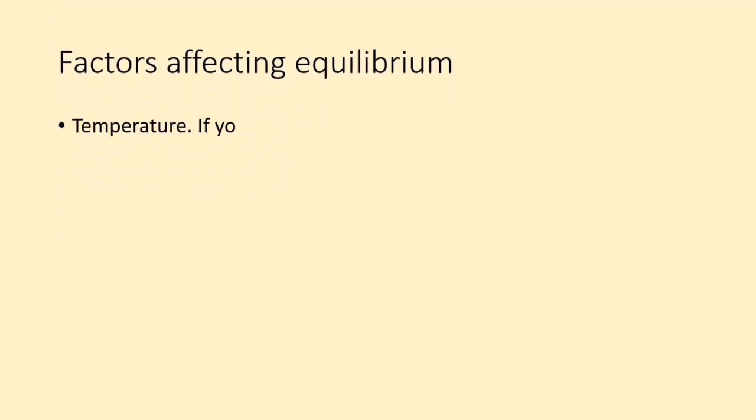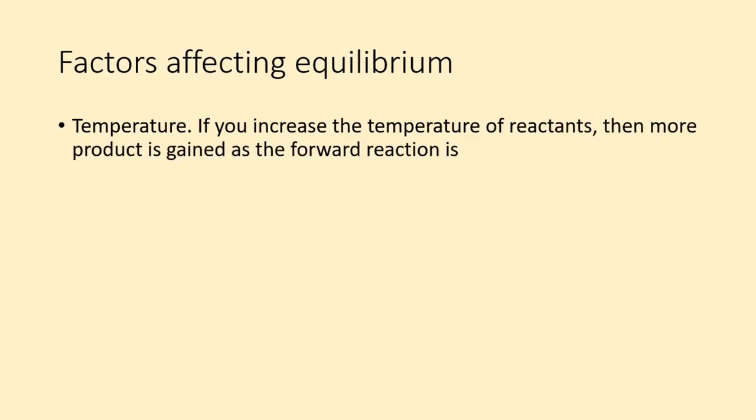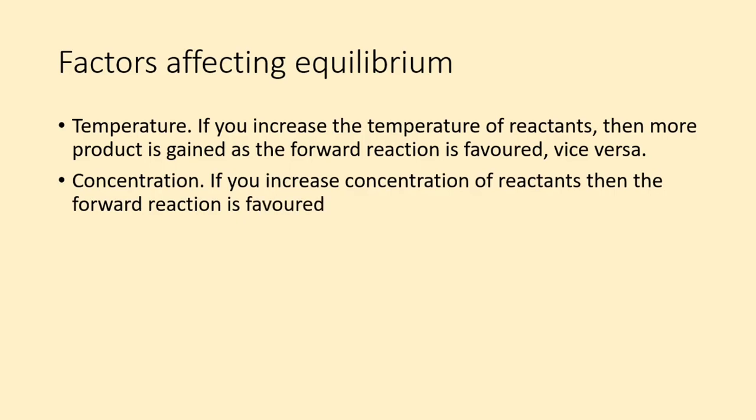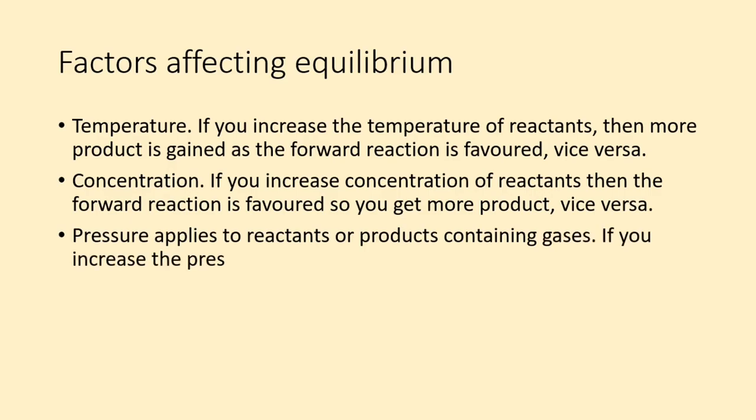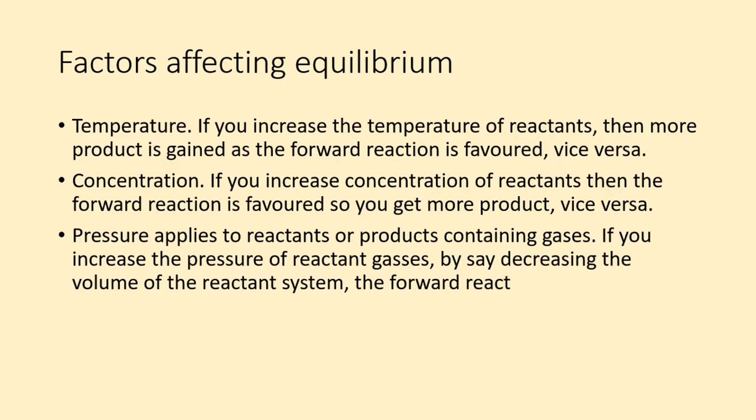Factors affecting reaction rate include temperature. If you increase the temperature of reactants, then more product is gained as the forward reaction is favored, vice versa. Now concentration. If you increase concentration of reactants, then the forward reaction is favored so you get more product, vice versa. Pressure applies to reactants or products containing gases. If you increase the pressure of reactant gases by, say, decreasing the volume of the reactant system, the forward reaction is favored, vice versa.